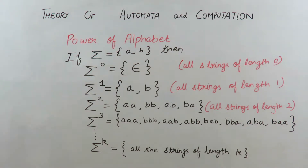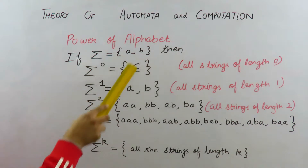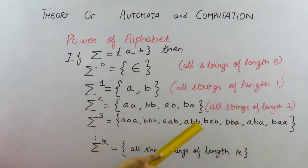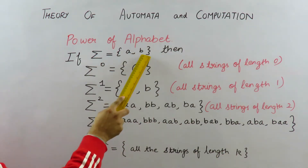Sigma raised to the power 3 means all possible strings made by combination of symbols of length 3 from the alphabet set. Suppose {a, b} is an alphabet set — these are the strings of length 3, all combinations of both symbols. Similarly, sigma raised to the power k will be all the strings of length k made by possible combination of all the symbols in sigma.